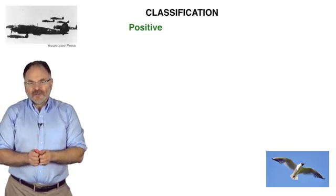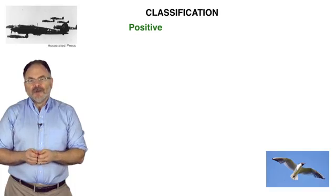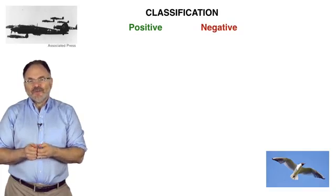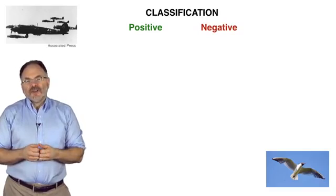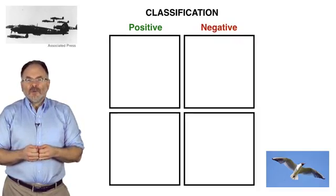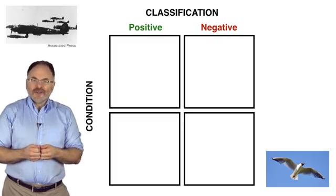So, we have two conditions, which we will call bombers and seagulls, and two classifications: positive, namely send up the fighters, and negative, do nothing. This gives us a two-by-two grid of four possible classifications plus conditions.